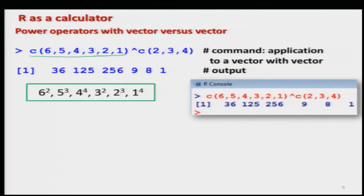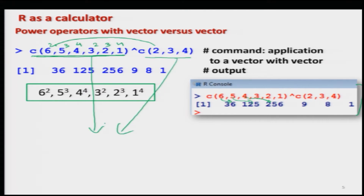In another example with 6 elements (6, 5, 4, 3, 2, 1) in the first vector and 3 elements (2, 3, 4) in the second, the second vector is recycled: 6^2=36, 5^3=125, 4^4=256, 3^2=9, 2^3=8, 1^4=1. Here the number of elements in the second vector is an exact multiple of the first, so it works cleanly. But if the lengths are not exact multiples, problems arise.